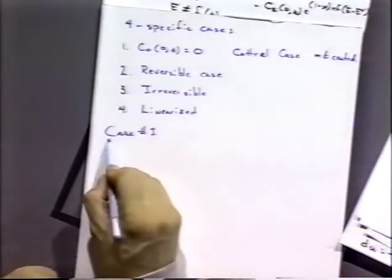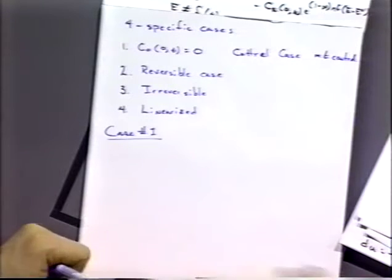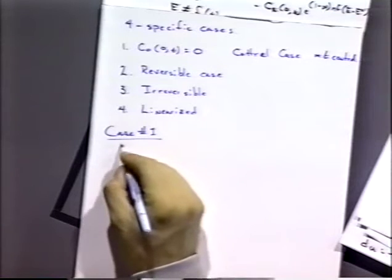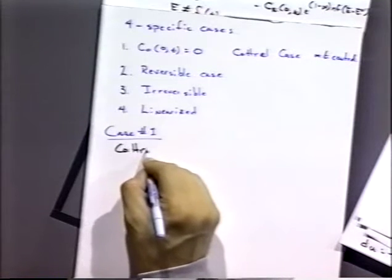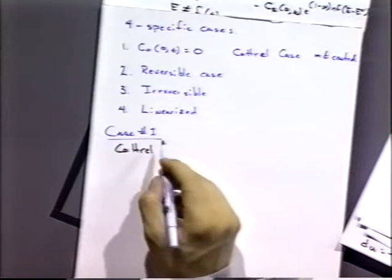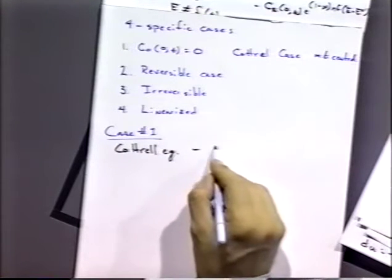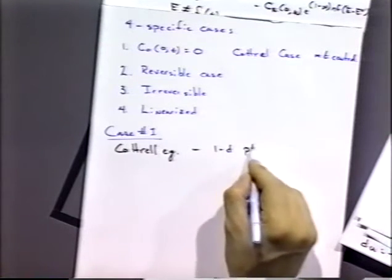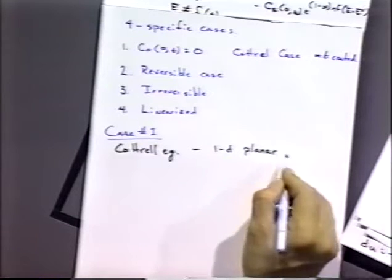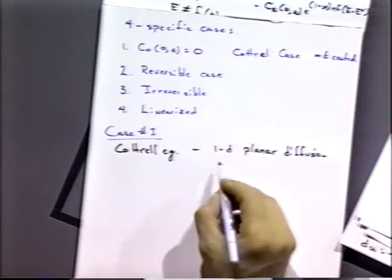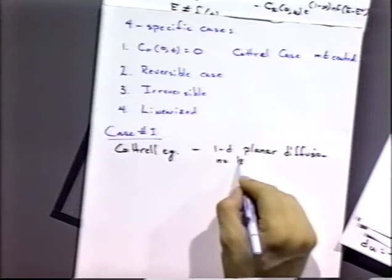Let's look at case number one — that's the case everybody always starts with in solving these problems, so it will not be any different. Case number one: what we're going to derive is the equation called the Cottrell equation. It's a one-dimensional planar diffusion problem with no kinetic effect.